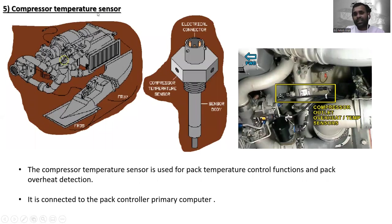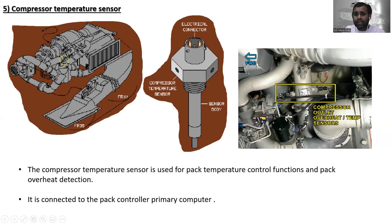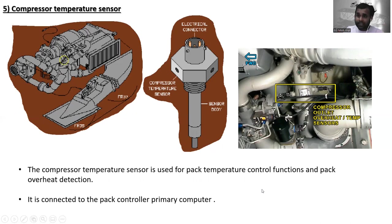The next one is the compressor temperature sensor. You can see it located here — this is the electrical connector, the sensor body, also identified as the compressor outlet overheat temperature sensor. The compressor temperature sensor is used for pack temperature control functions and pack overheat detection. It is connected to the pack controller primary computer.